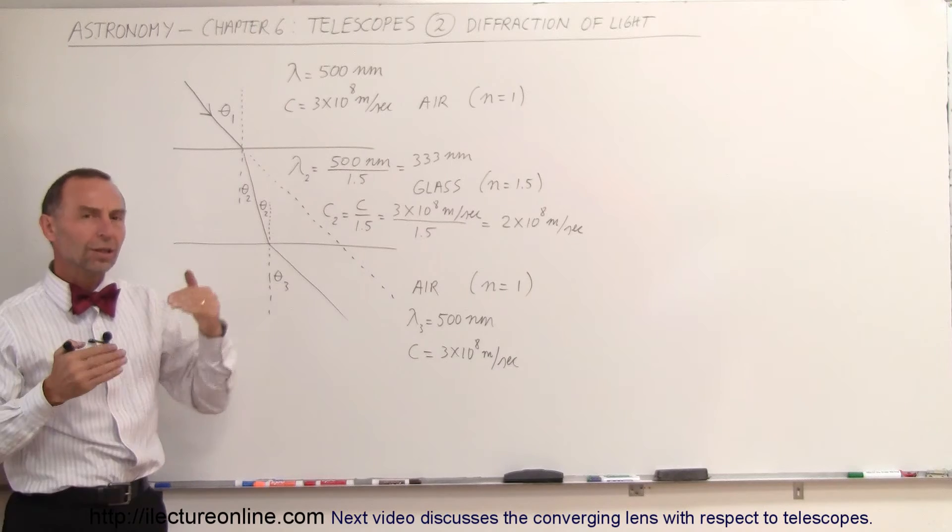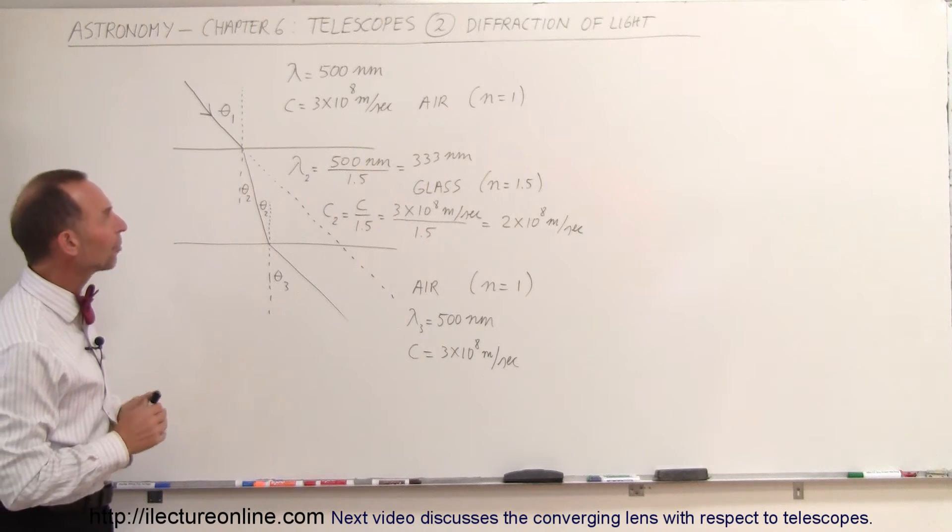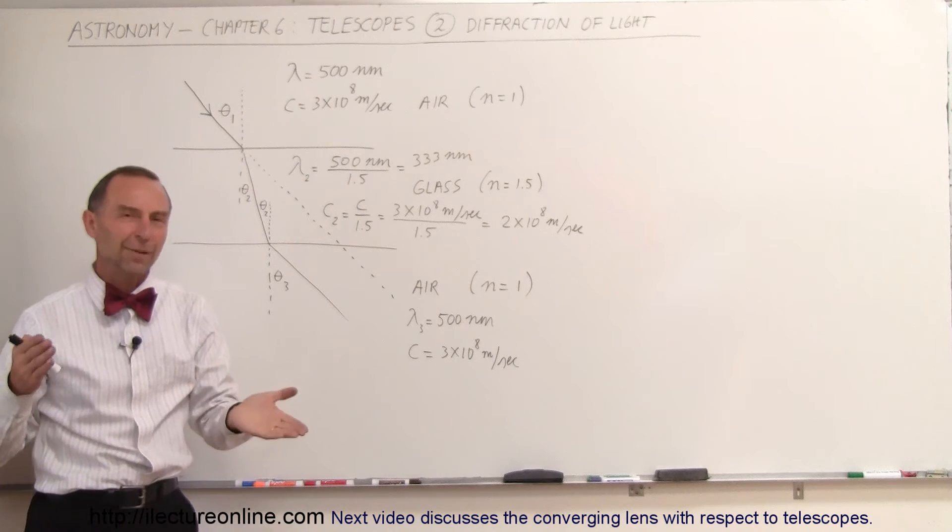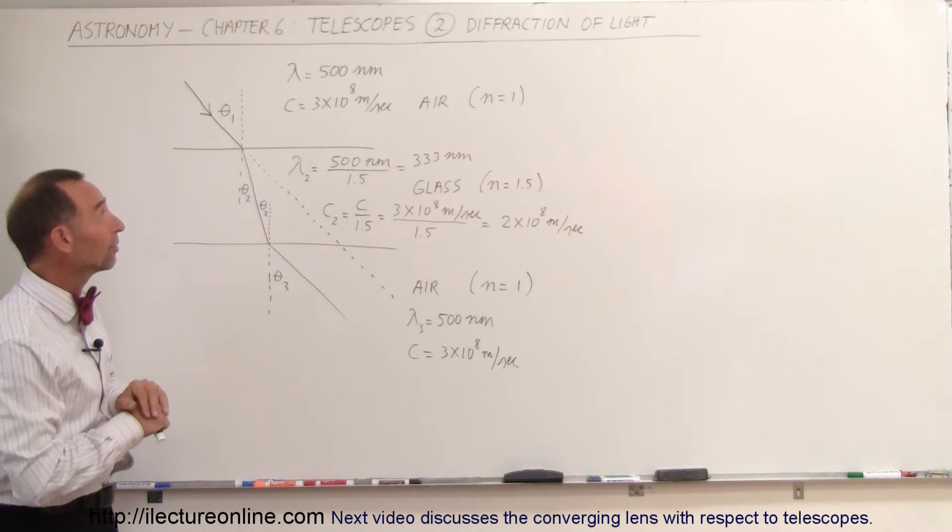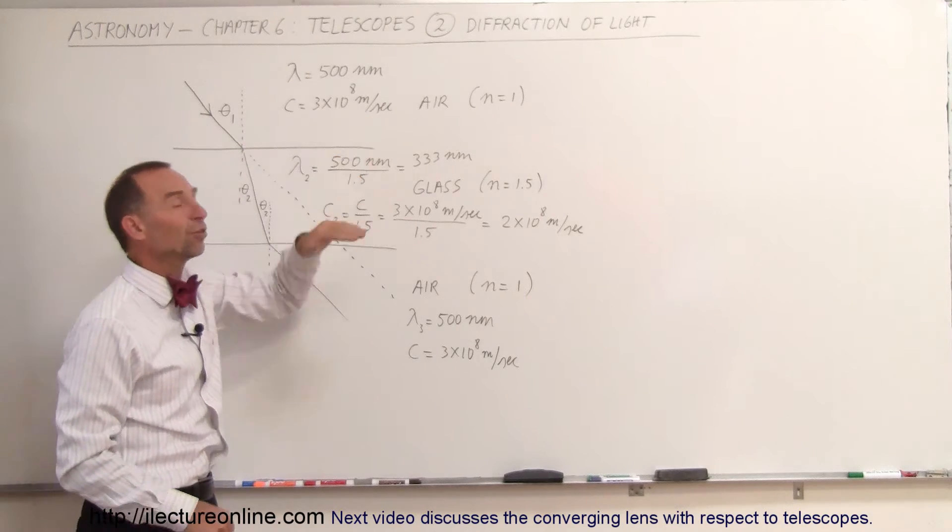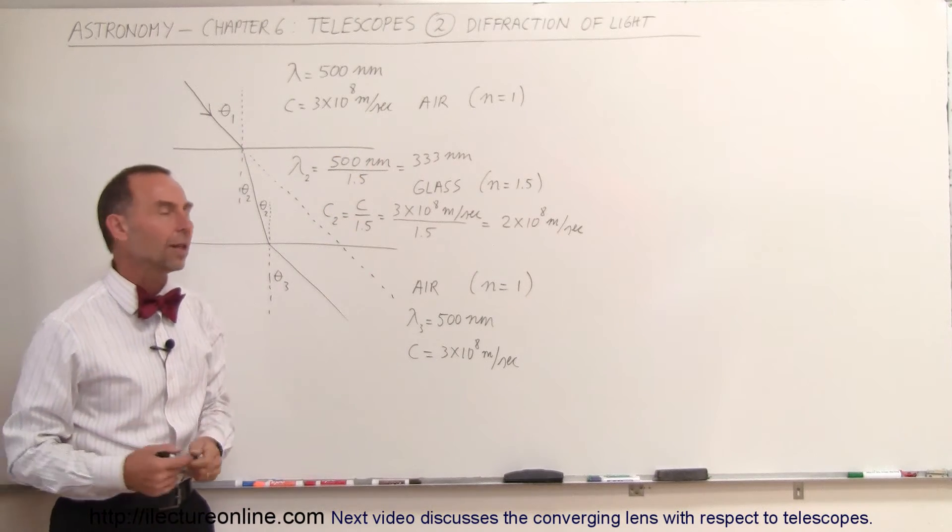In addition to the light bending, something else happens to the light. Let's say that the typical light has a wavelength of about 500 nanometers. We know it's somewhere between 400 and 700 nanometers. And we know that the speed of light is 3 times 10 to the 8 meters per second, about 300,000 kilometers per second.